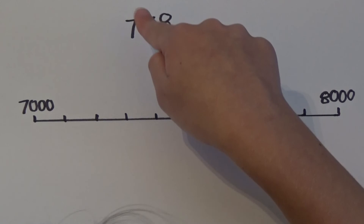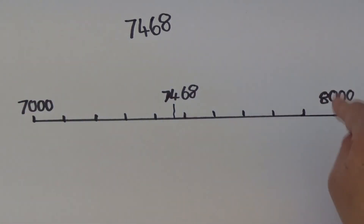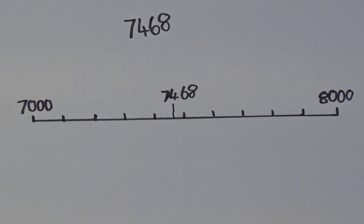For the last one, I'm going to round seven thousand four hundred and sixty-eight to the nearest thousand. I need to look at the thousands and the hundreds column to decide which multiples of one thousand it falls between. Seven thousand four hundred and sixty-eight falls between seven thousand and eight thousand. It is just below seven thousand five hundred, so I positioned it just before halfway along my number line. As it is below seven thousand five hundred, I must round it down to seven thousand.